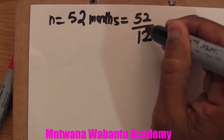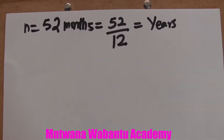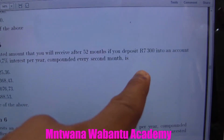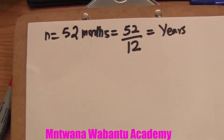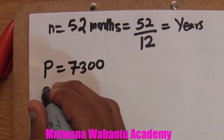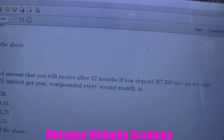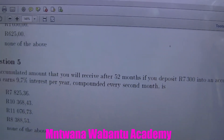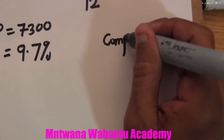To change months to years, divide by 12. Now, if you deposit 73,000 into an account, the principal P equals 73,000. The interest rate is 9.7%. They say it is compounded every second month, so this is compound interest — we'll use a different formula.